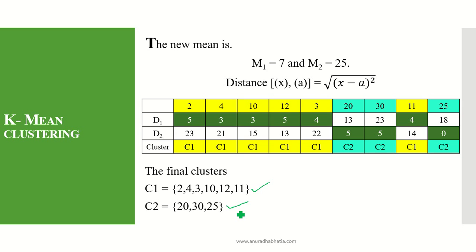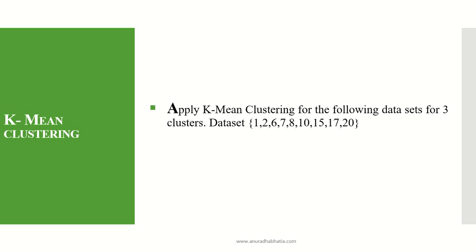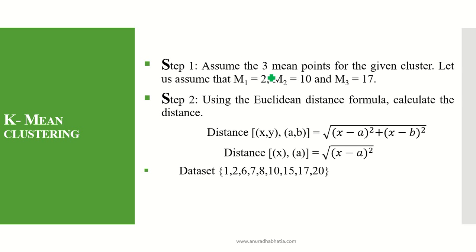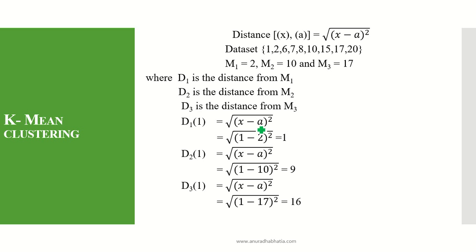This is how a single item set with two clusters is done. The next example is to apply K-Mean clustering for a data set for three clusters. That means we need to form three clusters. Assume the three mean points: let M1=2, M2=10, and M3=17. The mean values have to be present in your data set. We follow the same distance formula where X is the item set value and A is the mean value.